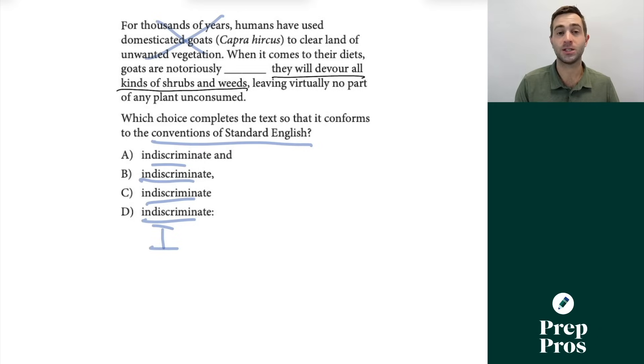Now, the only option which lets us join two full sentences together is going to be our colon. Now, most students are familiar that a colon can be used for listing items, but it also can be used if you have an independent clause before it, and you see explanation, definition, clarification afterwards, and that can include another independent clause. And that's exactly what's happening here. The second sentence is giving explanation about how they're notoriously indiscriminate. So that's where we can use the colon.